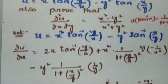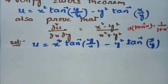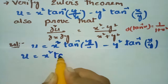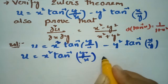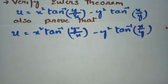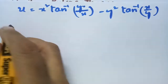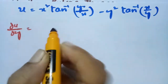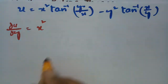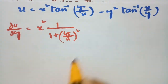Now I will make a derivative with respect to y. u equals x square tan inverse of y by x minus y square tan inverse of x by y. So ∂u/∂y: x square is treated as constant. The derivative of tan inverse of y by x with respect to y is 1 by 1 plus y by x whole square, times 1 by x.